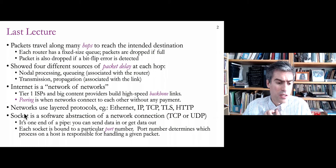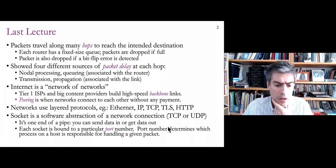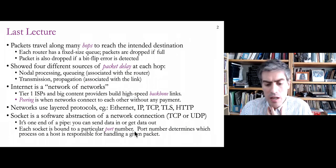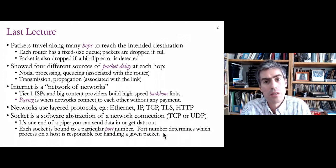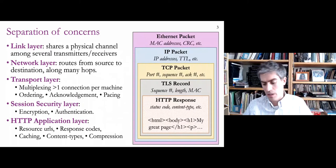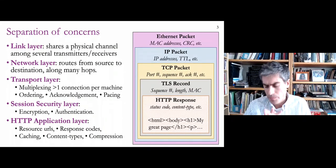A socket is essentially one end of a pipe — a connection that somehow gets data from you to some other party. We also have port numbers with sockets, and by having different port numbers, multiple network connections can exist on one computer. The port number determines which of the many programs running on a computer is going to receive a given packet.